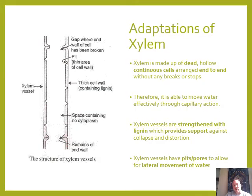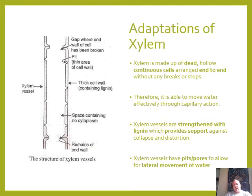This is beyond important — I love asking at least two to three adaptations. You can also draw the diagram on the left-hand side and add these notes to it. Xylem is made up of: dead cells (number one), hollow continuous cells (number two), arranged end-to-end (number three) without any breaks or stops — therefore able to move water effectively through capillary action. The xylem is strengthened with lignin (number four) to provide support (number five) against collapse and distortion under pressure.